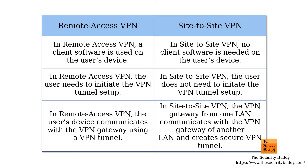To summarize, here are the differences between a Remote Access VPN and a Site-to-Site VPN. In Remote Access VPN, client software is used on the user's device; in Site-to-Site VPN, no client software is needed. In Remote Access VPN, the user needs to initiate the VPN tunnel setup; in Site-to-Site VPN, the user does not. In Remote Access VPN, the user's device communicates with the VPN gateway using a VPN tunnel. In Site-to-Site VPN, the VPN gateway from one LAN communicates with the VPN gateway of another LAN, creating a secure VPN tunnel.